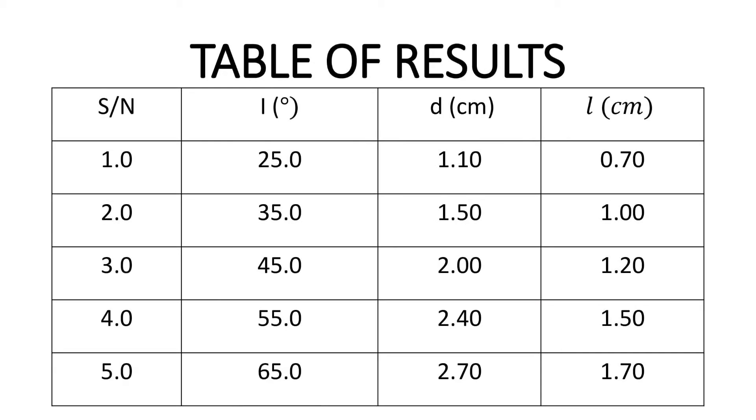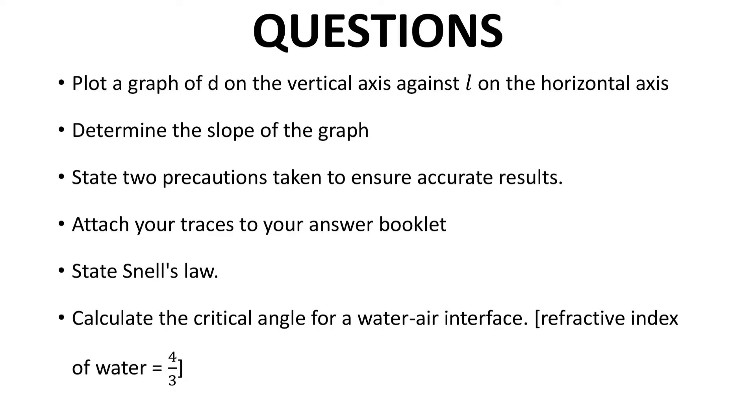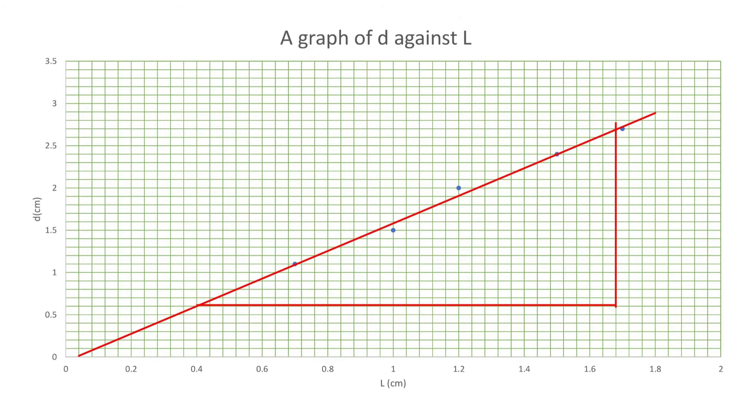Okay guys, now after the experiment here is what our table looks like. You can see here on the table we have the columns for the angle of incidence which is given to us in the question from 20 to 60 degrees and we use that all during the experiment. But the most important is that from the experiment we conducted we got our D and our L as it has been recorded here, 1.1 to 2.7 and 0.7 to 1.7 for the L, all in their respective units.